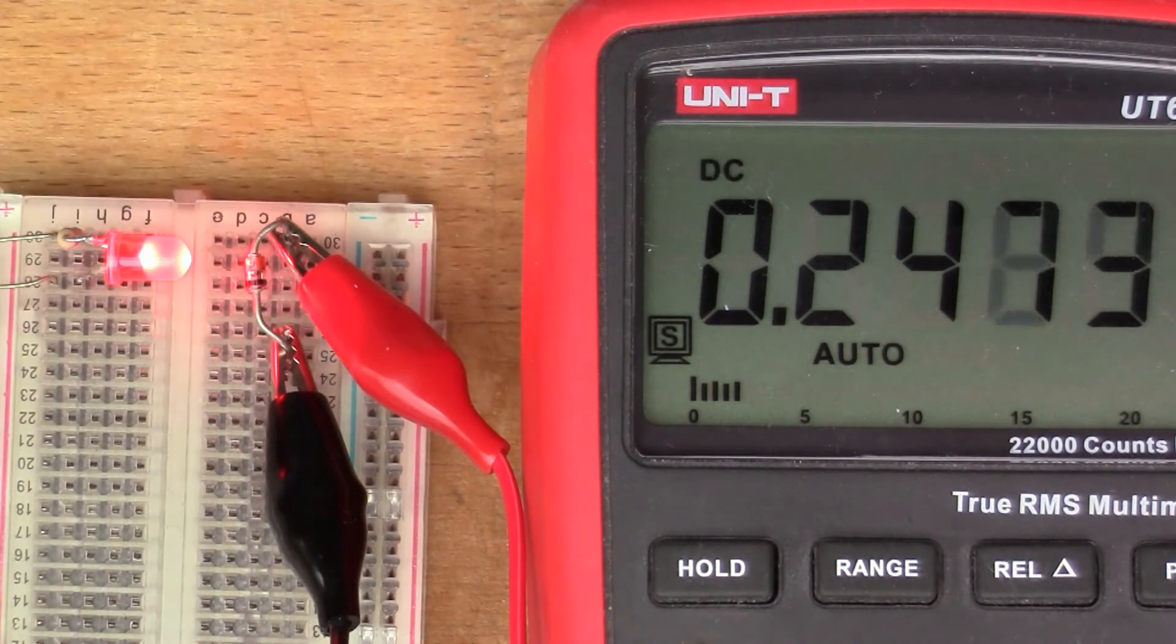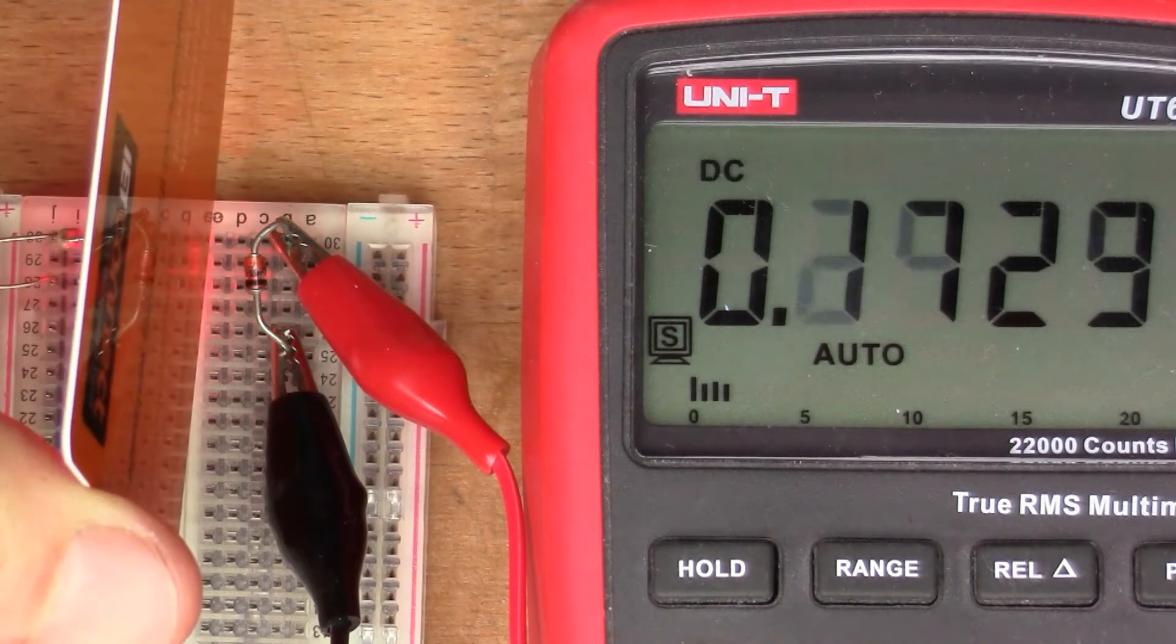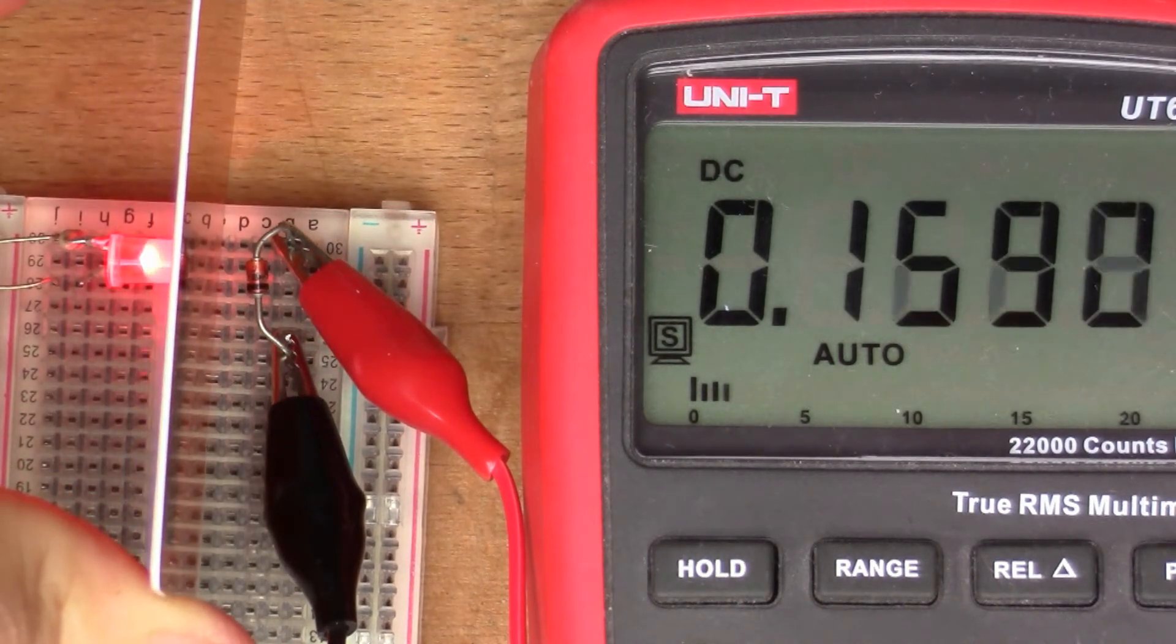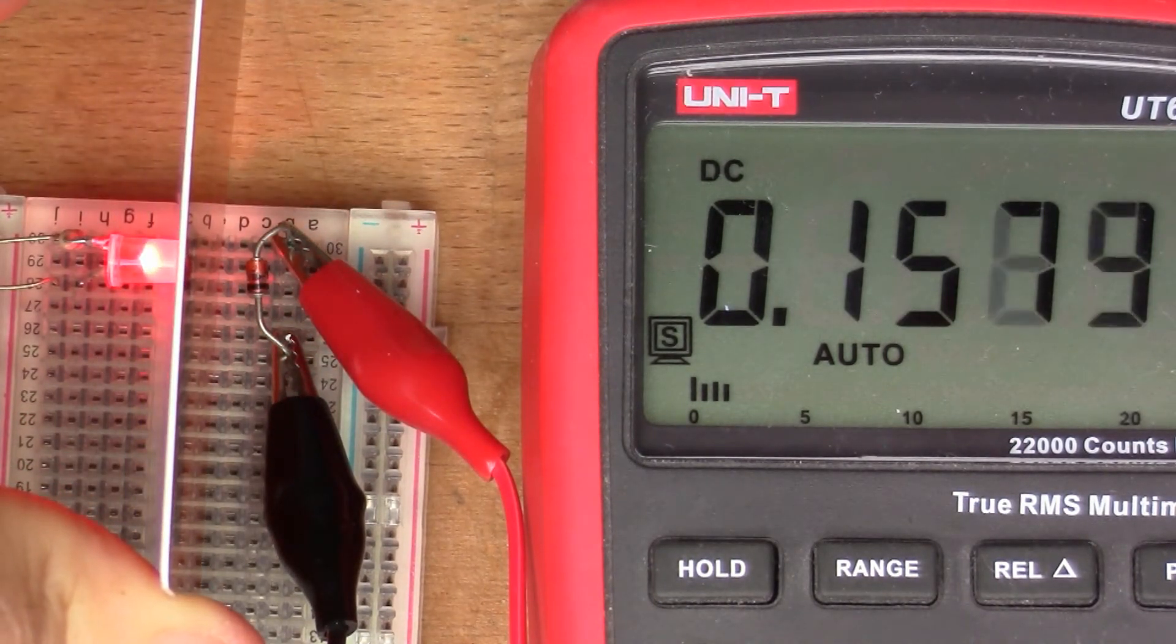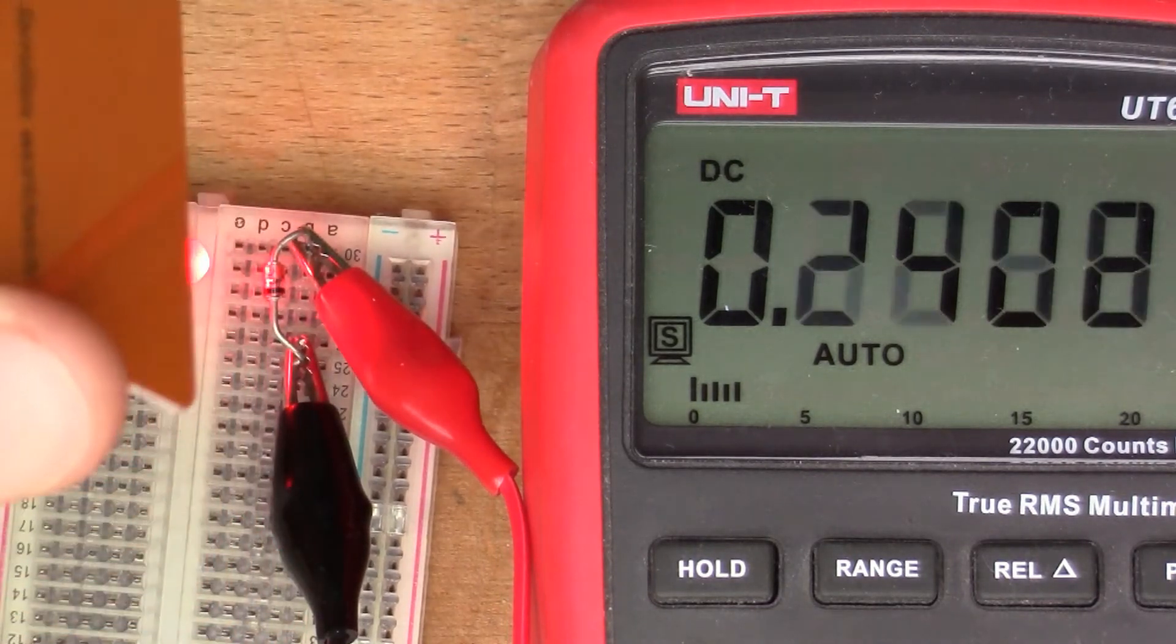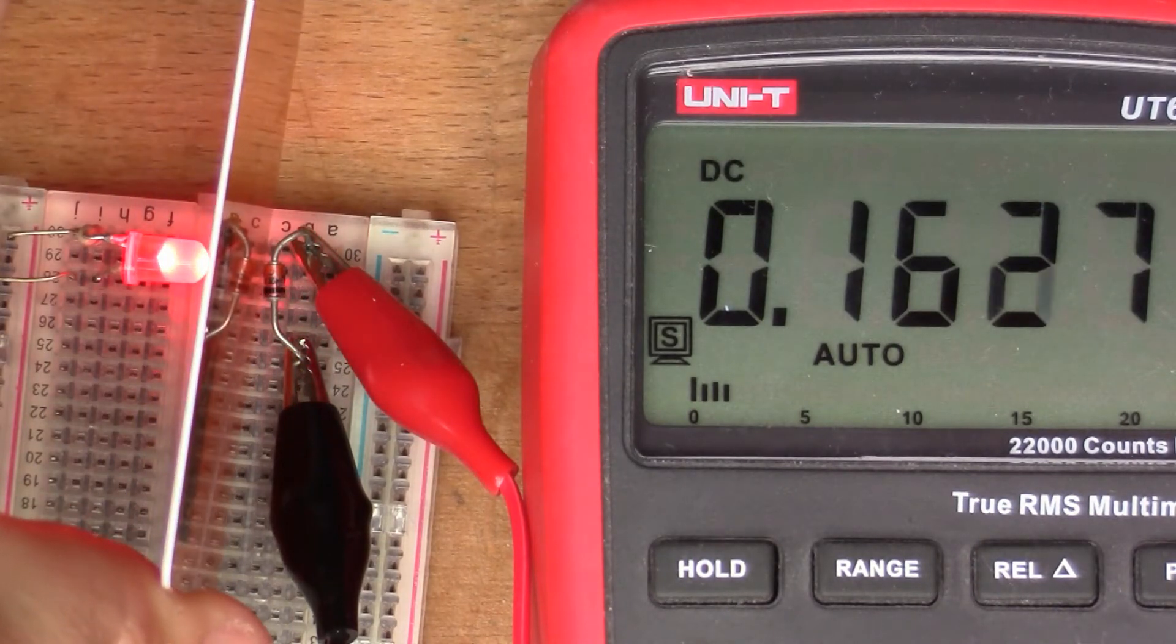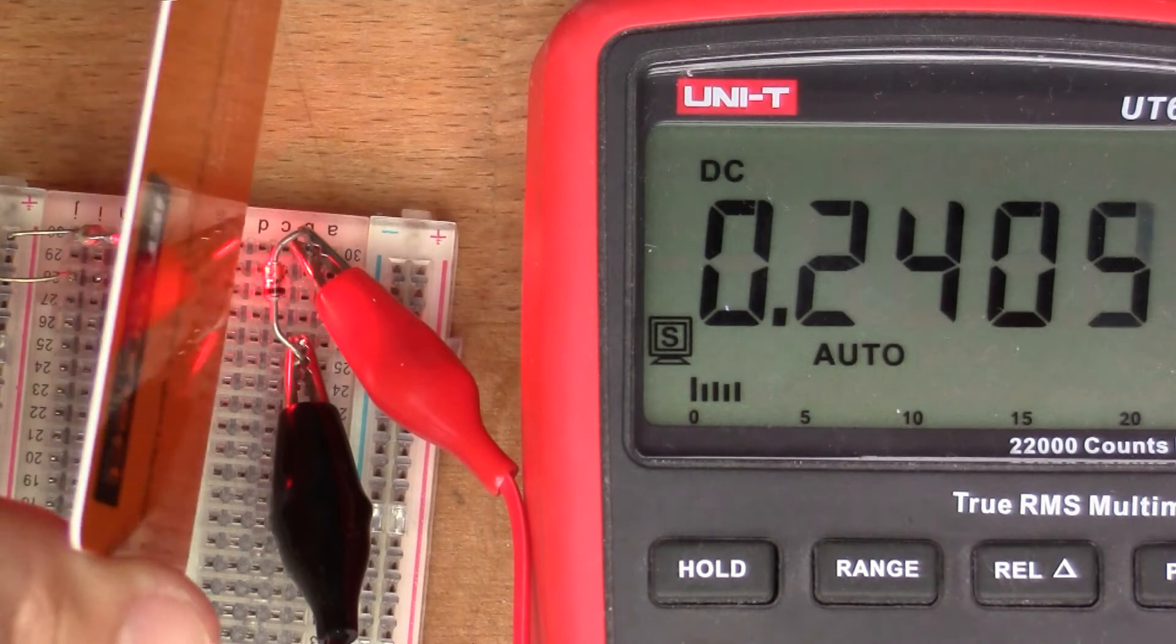So with the light on we've got 0.25 volts. If I interrupt the light beam you can see that it straightaway drops right down - that's about 160 millivolts. So the diode is being affected by the light here.